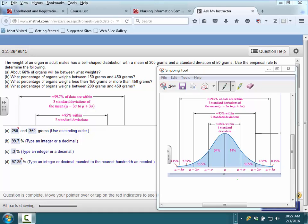In this video, we will see how the Empirical Rule can be used on bell-shaped distributions. In this problem, the weight of an organ in an adult male has a bell-shaped distribution with a mean of 300 grams.